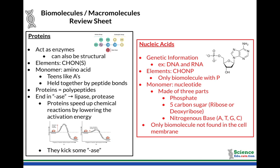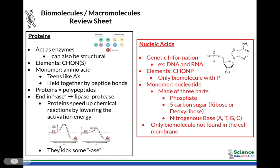Proteins that act as enzymes speed up chemical reactions by lowering the activation energy — essentially the energy needed to get a reaction started. Imagine climbing a big hill versus going over a speed bump: the speed bump takes less energy to get over. When you add an enzyme to a reaction, the reaction will still take place, but the enzyme makes it happen at a faster rate. This is lowering the activation energy.